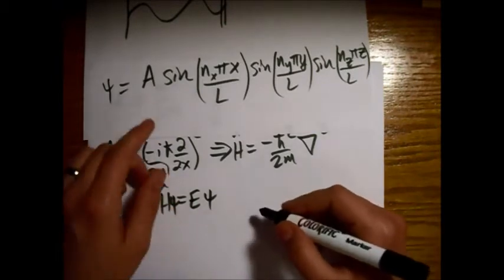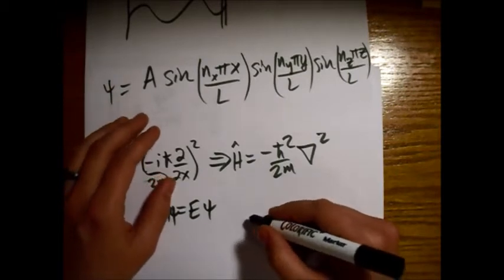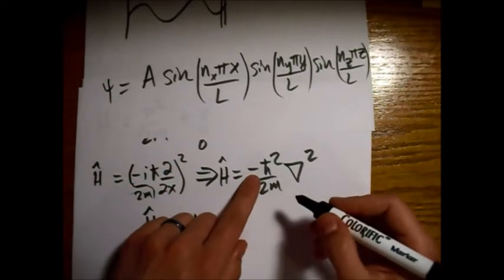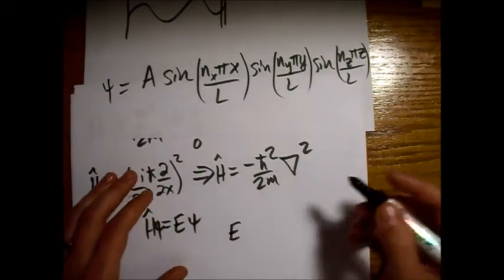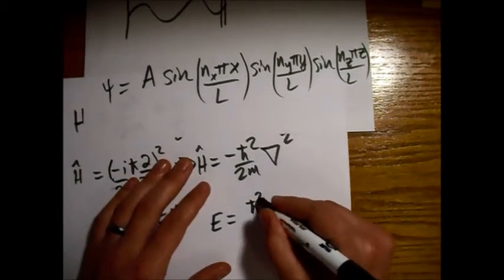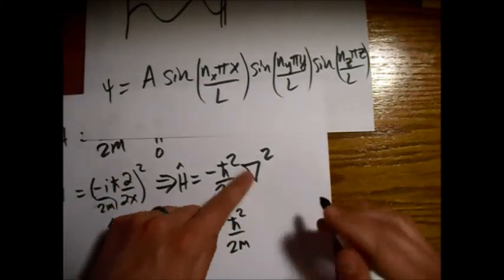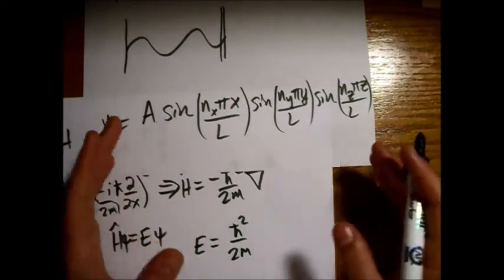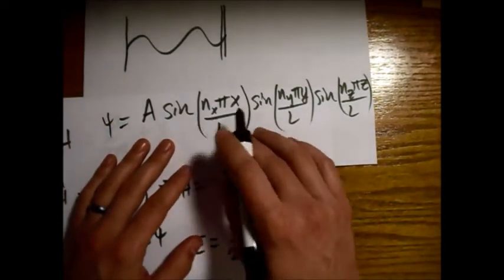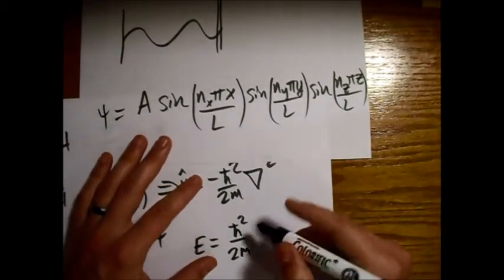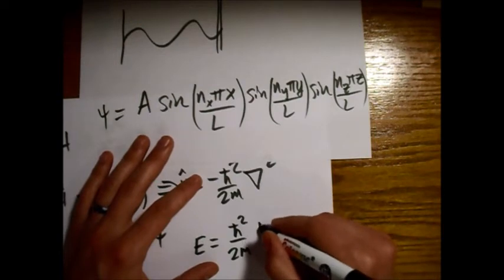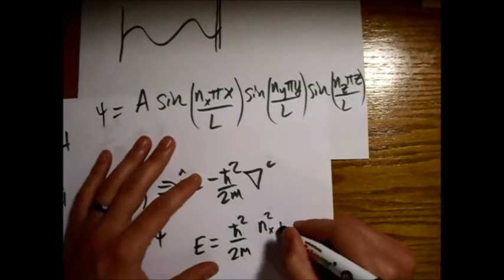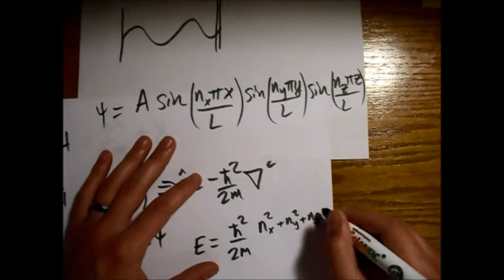We get this minus sign. So we have a minus sign that will cancel out this minus sign. And so we have this h bar squared over 2m still out the front. And then from each of these, I'm going to go ahead and combine them into one vector term instead of these components, x, y, and z.